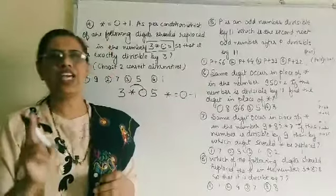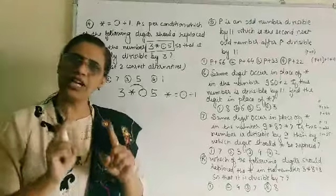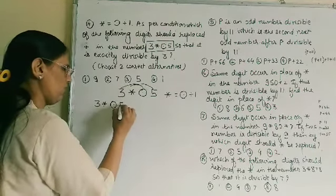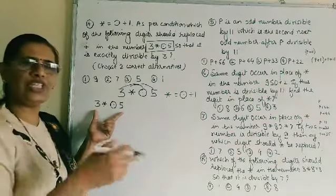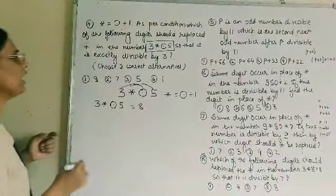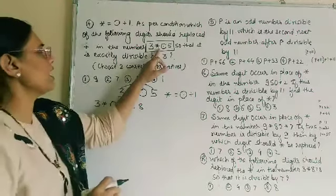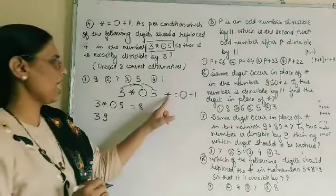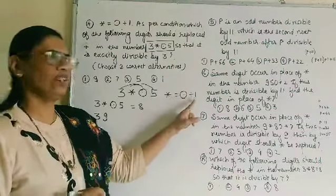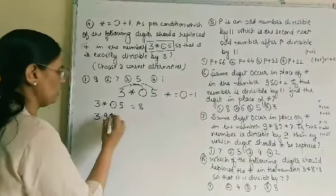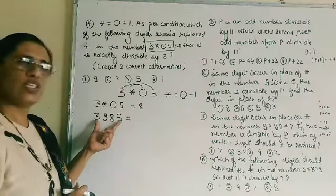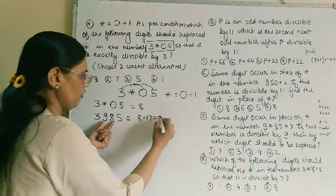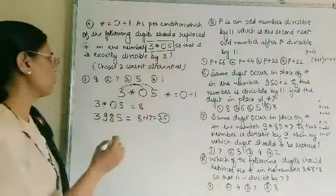The divisibility test for 3 is: if the sum of the digits is divisible by 3, then the number is divisible by 3. The known digits are 3 and 5, and their sum is already 8. We now check each option. Taking the first option with star = 9 and circle = 8: total sum is 8 plus 9 plus 8, which is 25. Since 25 is not divisible by 3, the first option is not valid.